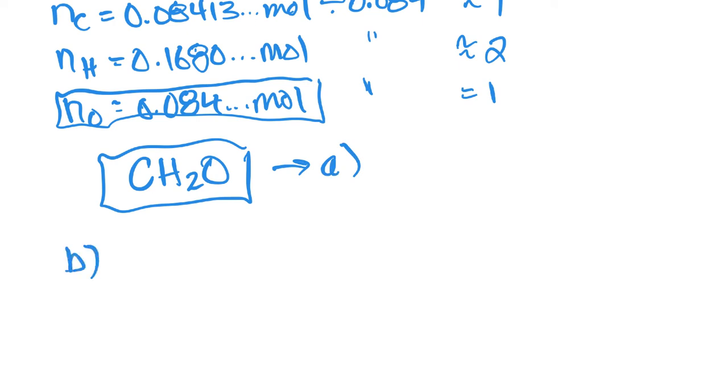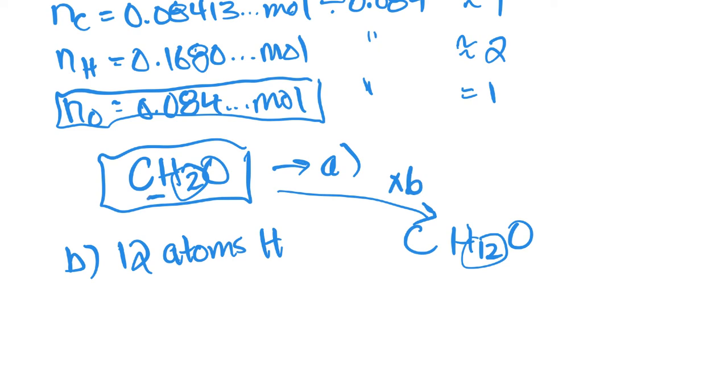For part B, the question says if we had 12 atoms of hydrogen, then what is our molecular formula? What we need to do here is put in 12 for our hydrogen and take a look at what's happening between our empirical and our molecular formula. The subscripts here are going from 2 to 12, or we're multiplying it by 6, which means we need to multiply all the subscripts by 6. This gives us a molecular formula of C6H12O6, otherwise known as glucose.